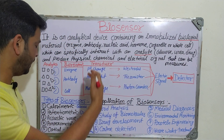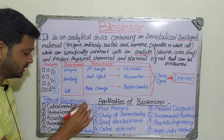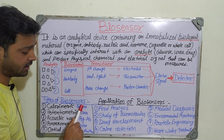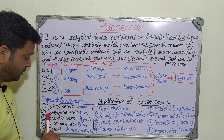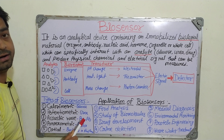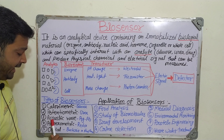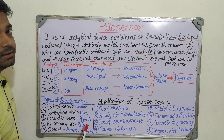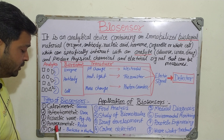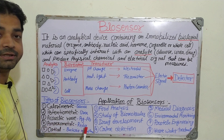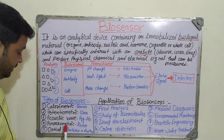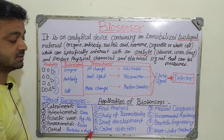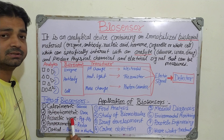Coming to the types of biosensors, there are five types. First, the calorimetric biosensor, which can detect glucose using glucose oxidase. Second, the potentiometric biosensor, used for detection of urea. Third, the acoustic wave biosensor, where antigen-antibody reactions are detected. Fourth, the amperometric biosensor, where redox reactions can be measured. Fifth, the optical biosensor, which can detect bacteria in food and clinical samples like blood and pus.